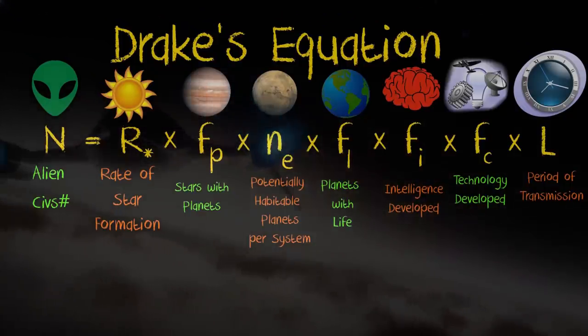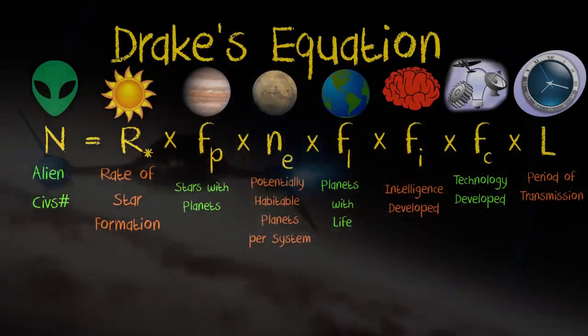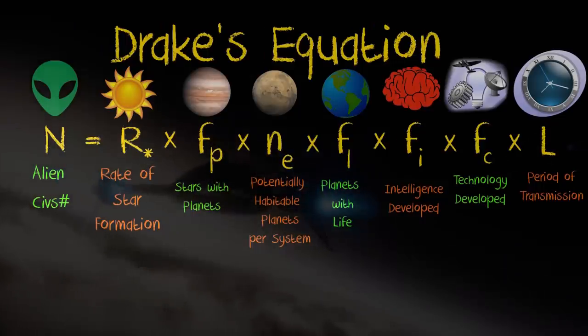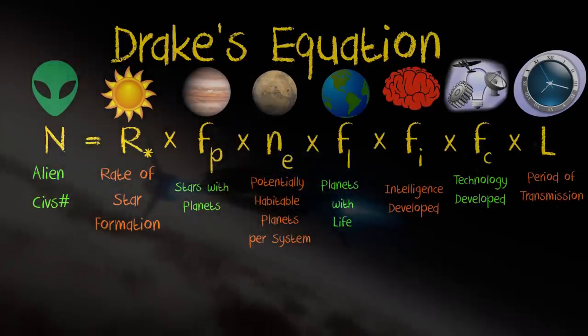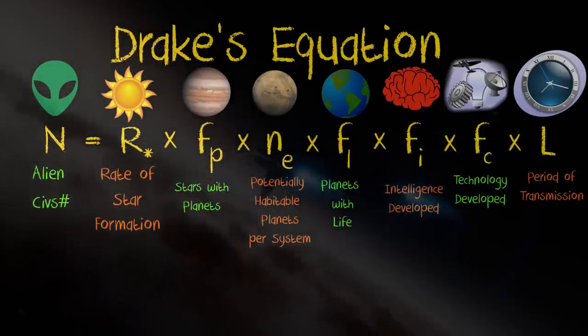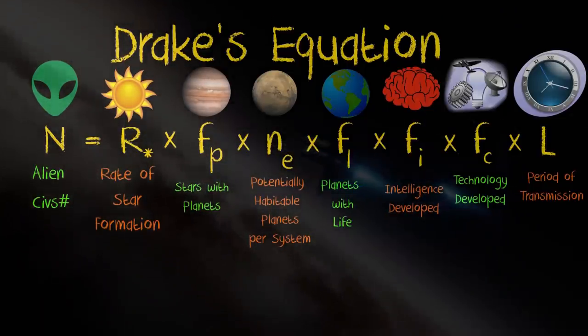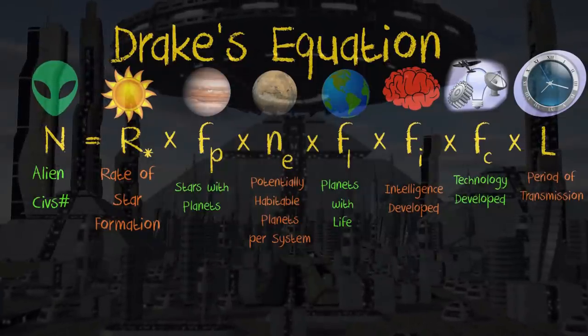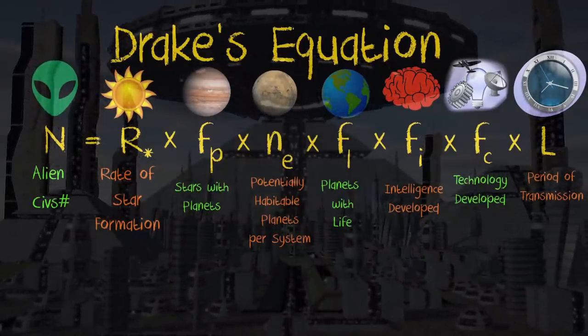Before we even start into the equation itself, we should take a moment to consider that this equation is only discussing the Milky Way Galaxy, which is one issue I have with it, and is something we'll revisit later. Secondly, it aims to calculate the number of active civilizations in this galaxy at the moment which we can detect, not which have ever existed.